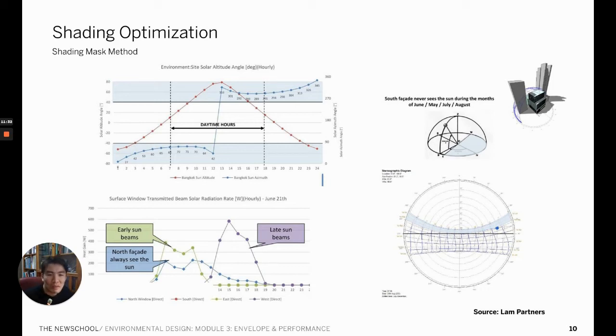This example shows the basic solar data of Bangkok. By looking at the solar altitude and azimuth angle information, you can get a sense of the basic pattern of solar movement. Also, by running the initial heat gain simulation for each orientation surface, which this diagram represents, you can get a basic understanding which side needs the shading the most and what time.